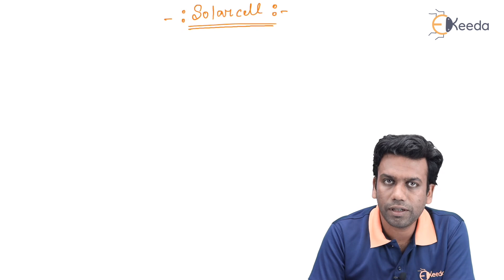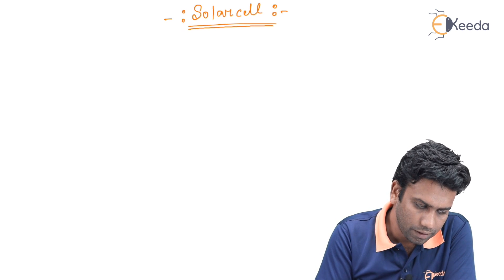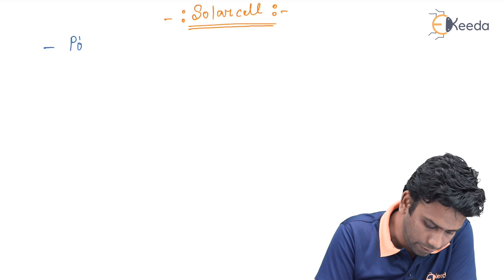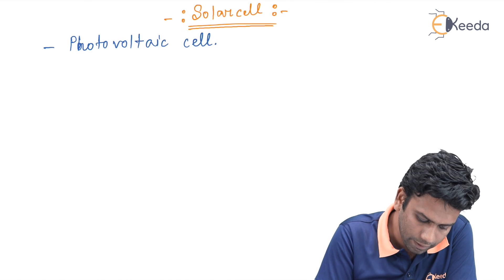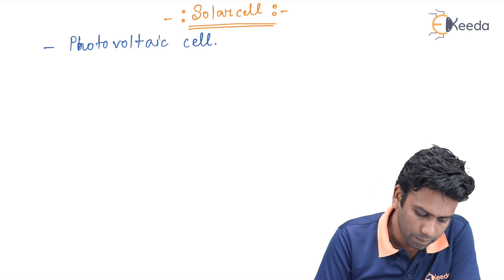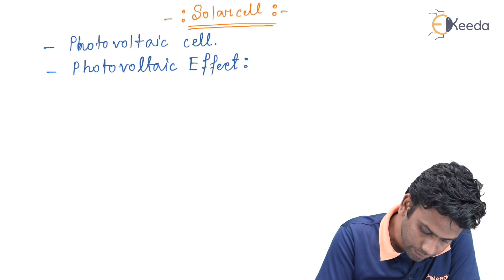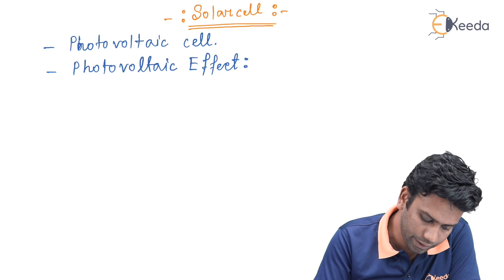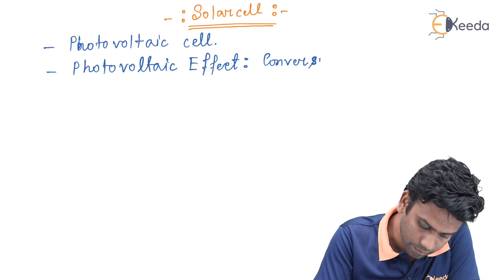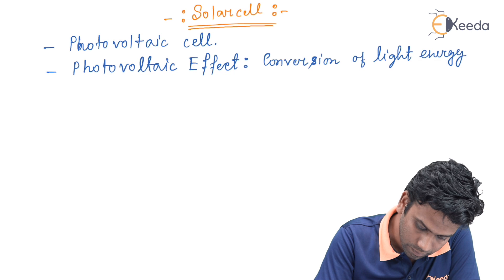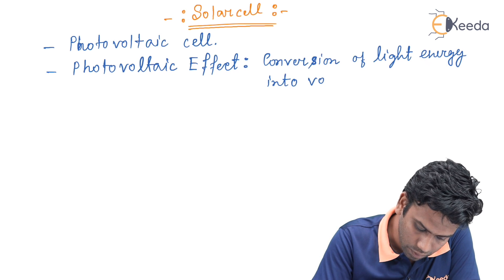This solar cell device is nothing but a p-n junction device and it operates on the photovoltaic effect. The solar cell is a photovoltaic cell, and the principle by which the solar cell operates is known as the photovoltaic effect. This photovoltaic effect means it is a conversion of light energy into voltage.